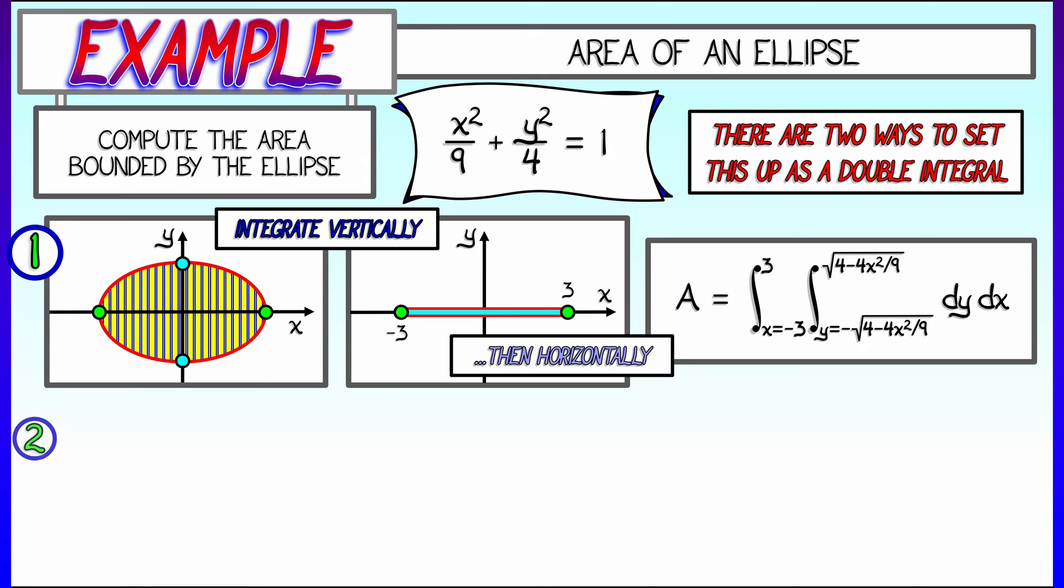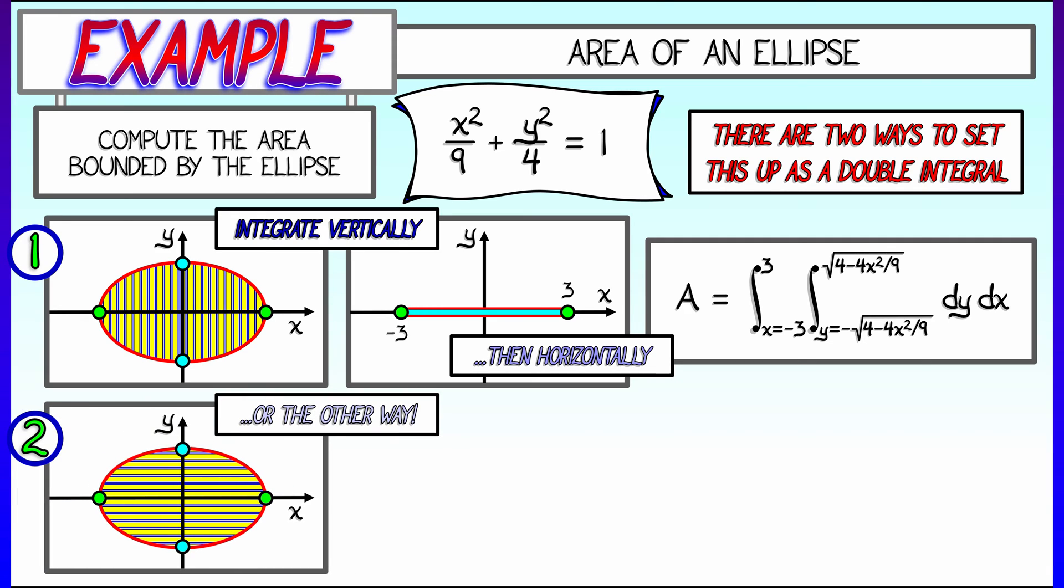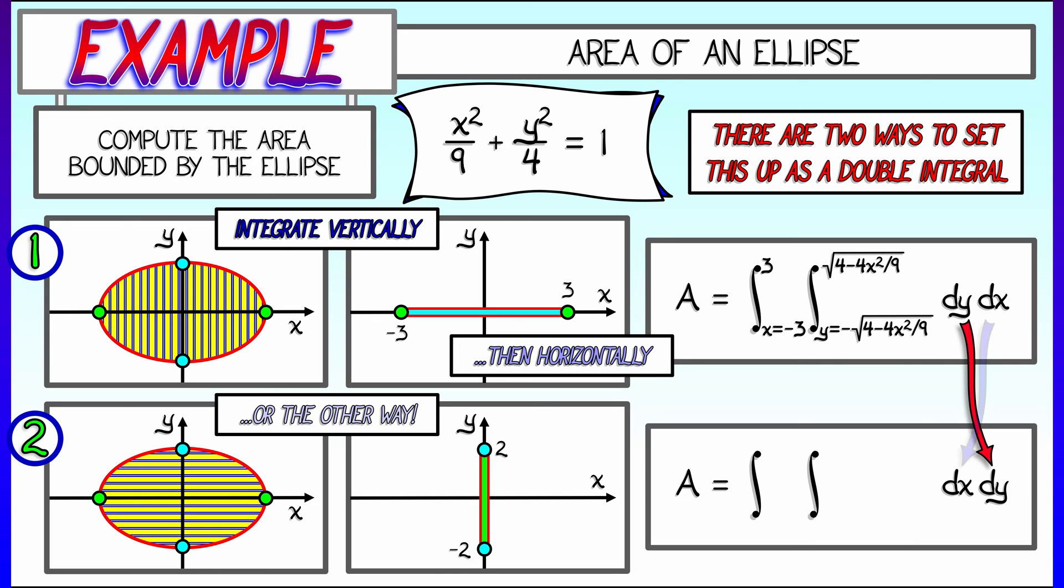The second approach involves integrating horizontally first, and then integrating vertically. Now to do this, what would we have to do? We would switch the order of integration. We would be integrating dx dy, and then solving for the equation of the ellipse, solving for x in terms of y, we would get x going from minus square root of 9 minus 9 fourths y squared, to positive square root of 9 minus 9 fourths y squared.